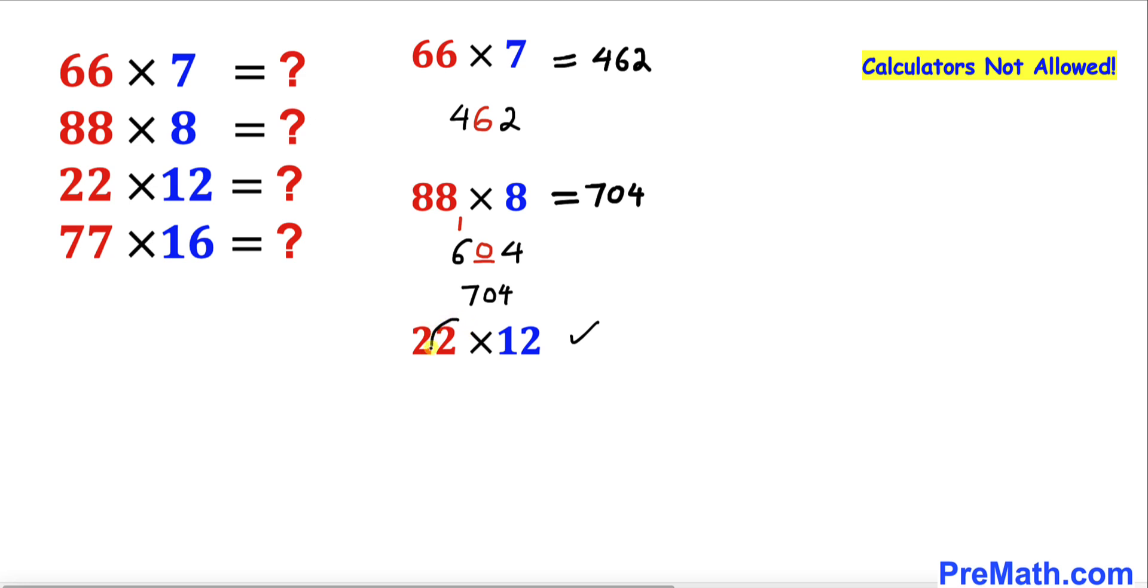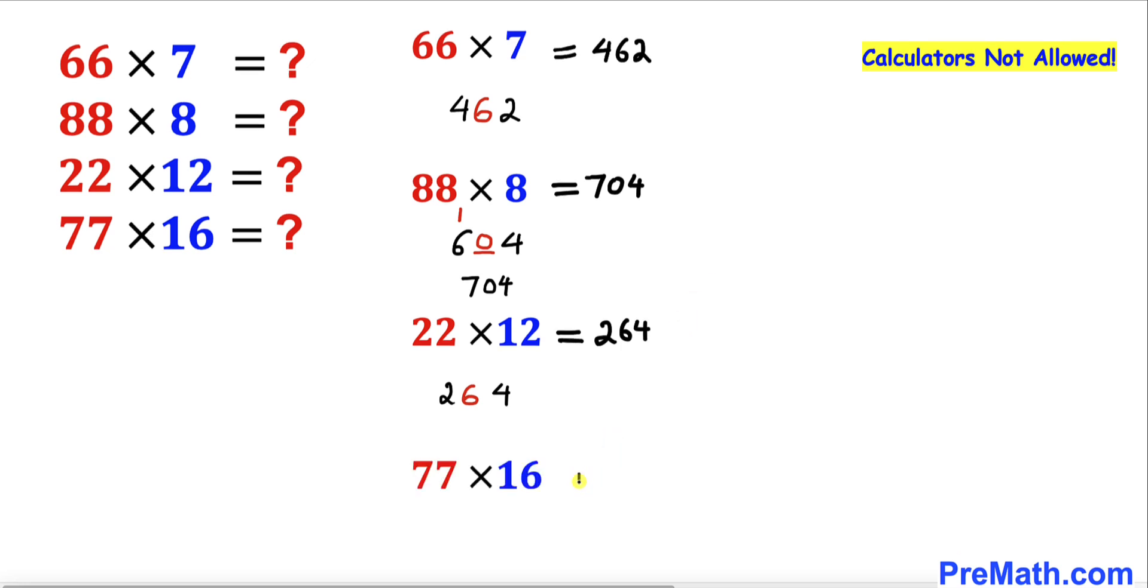Once again we are going to multiply only these two numbers 2 times 12 is going to be 24 and now let's add these two numbers 4 plus 2 is going to be 6 and we're going to put 6 in the middle so our answer turns out to be 264 and here's our final example.